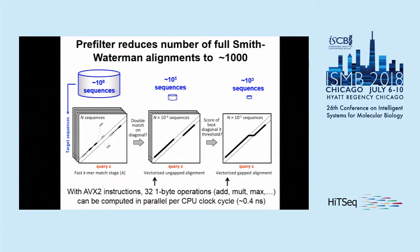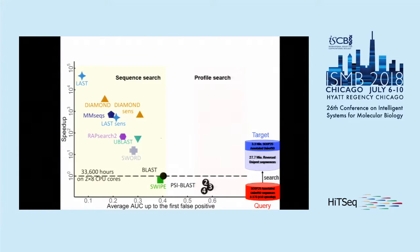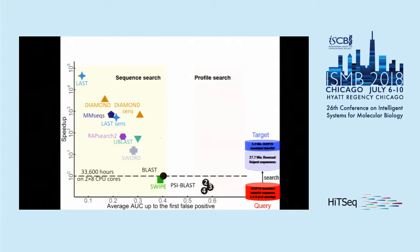After detecting these double diagonal hits, we do an ungapped alignment and check if the score is above a certain threshold. If it is, we do a real Smith-Waterman gapped alignment. We benchmarked our method against commonly used sequence search tools like Diamond, MNC, Last, RapSearch, Sword, U-Blast, Blast, Swipe, and even PSI-Blast.